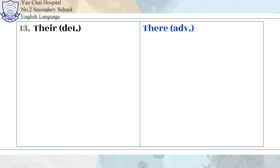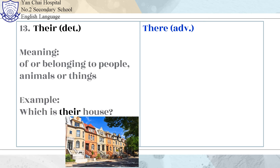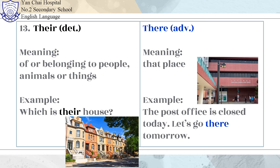Number 13: Their and There. Their means of or belonging to people, animals, or things. Example: Which is their house? There means that place. Example: The post office is closed today. Let's go there tomorrow.